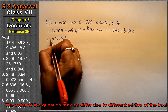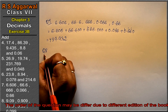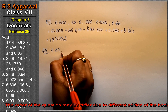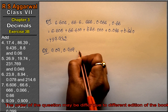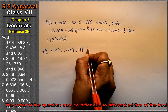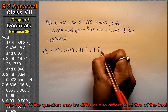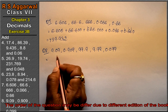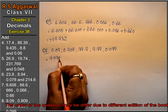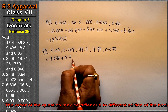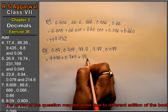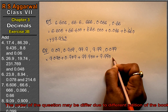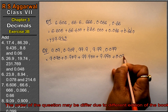Let's do question number 8. Question number 8 is 9.09, 0.909, 99.9, 9.99 and 0.099. So let's do: 9.090 plus 0.909 plus 99.900 plus 9.990 plus 0.099.